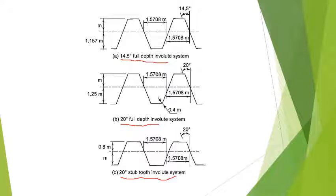In the 20 degree stub involute system, the addendum is 0.8 times the module, making the teeth shorter compared to the other two systems. This results in lower production cost and the ability to transmit higher loads. However, the contact ratio — the number of pairs of teeth in contact — is reduced due to the shorter addendum, and vibrations may occur.